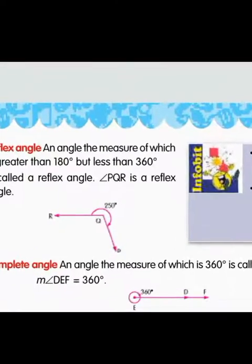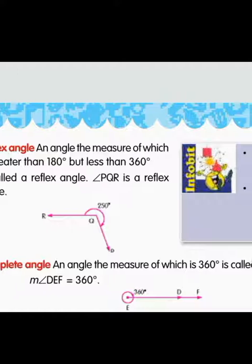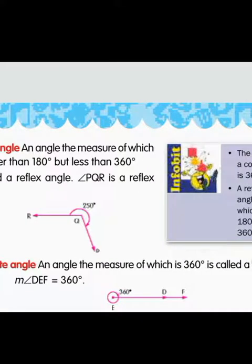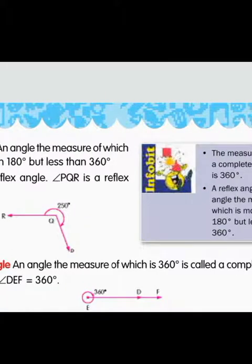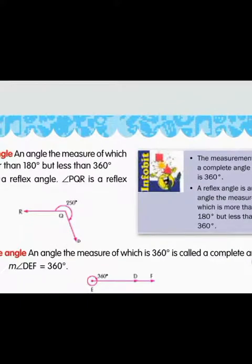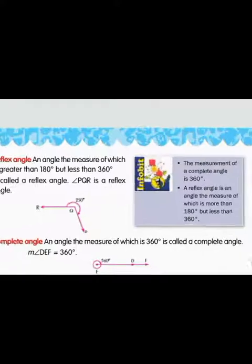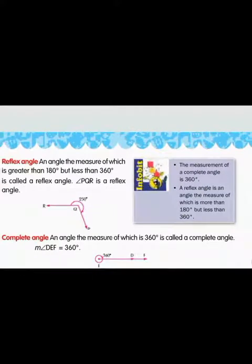The last type is a complete angle. An angle whose measure is 360 degrees is a complete angle. The angle around a point — or in a circle — measures 360 degrees. Here you can see the measure of angle DEF forming a complete circle, which is 360 degrees. That is a complete angle, a full circle.